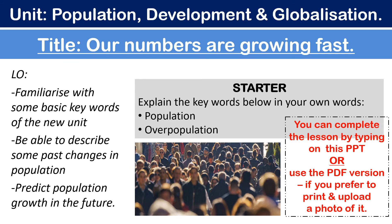Overpopulation is when there are too many people in an area. If Bishop Chaloner School was overpopulated, it would probably mean there weren't enough chairs for people to sit on, not enough food in the canteen, and not enough space to move around the corridors. Overpopulation isn't always a bad thing, but there are negatives associated with having too many people in a place — we're going to explore the impacts of overpopulation in greater detail next lesson.